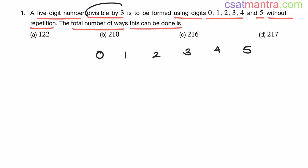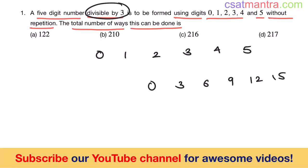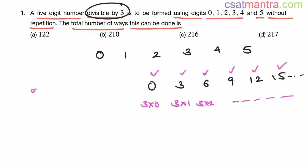What is the divisibility rule of 3? If a number is divisible by 3, its digit sum — sum of its digits — should be divisible by 3. So the sum of digits can be 0, 3, 6, 9, 12, 15, and so on — multiples of 3. So if a number A B C D E is given, then A + B + C + D + E should be divisible by 3 for the number to be divisible by 3.